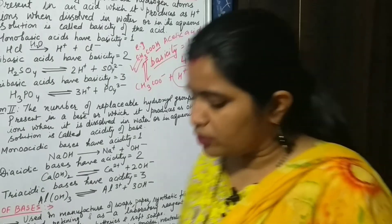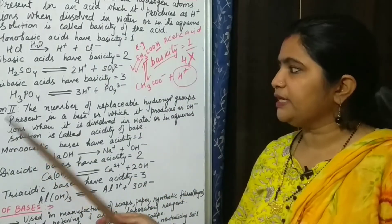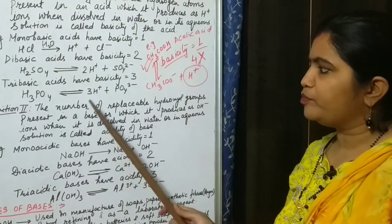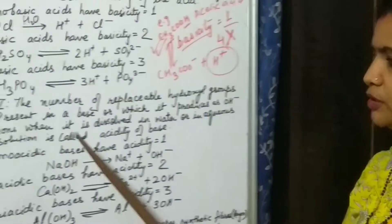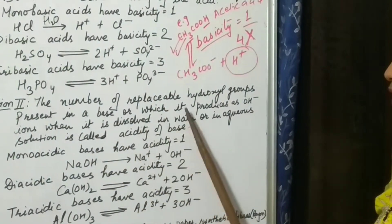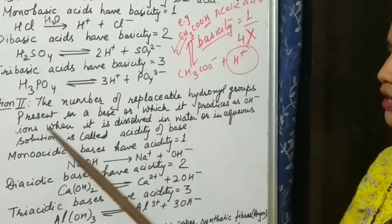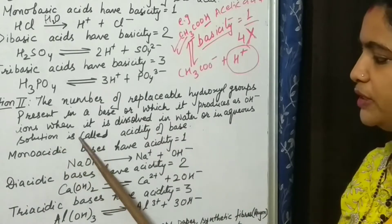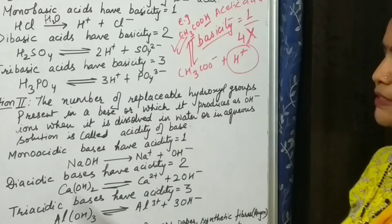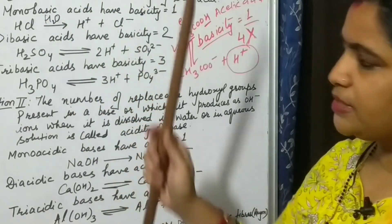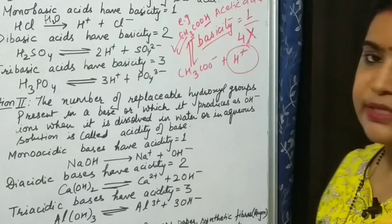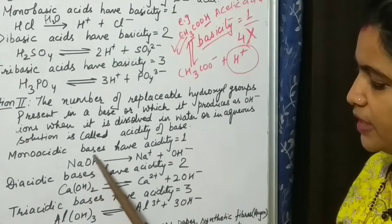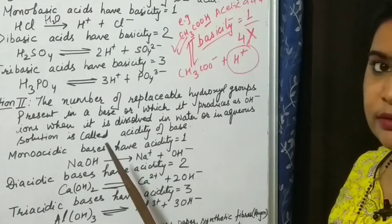Now moving on to the next definition: acidity of bases. The number of replaceable hydroxyl groups present in a base which it produces as OH- ions when dissolved in water or in aqueous solution is called acidity of the base. Similarly, just we have talked about basicity, here we will see that acidity means how much OH- ion is liberated in case of base. This indicates its acidity.